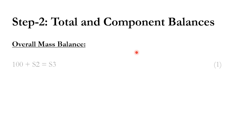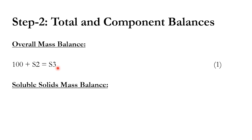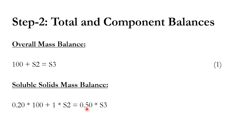Applying total and component balances: the overall mass balance gives 100 + S2 = S3. For the soluble solid balance: 0.2 × 100 + 1 × S2 = 0.5 × S3, which simplifies to 20 + S2 = 0.5 × S3. We then solve these two equations simultaneously.